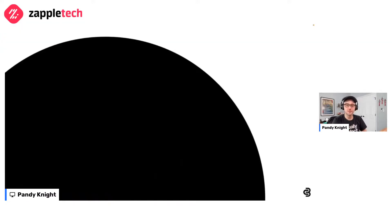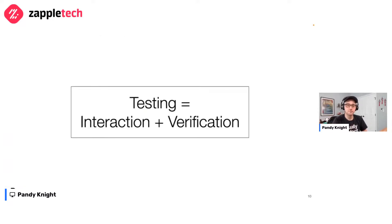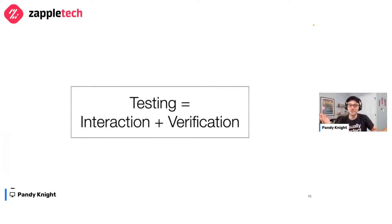To start, let's define that big 'I' word — interactions. Simply put, interactions are how users operate software. For this talk, I'll focus on web UI interactions like clicking buttons and scraping text. Interactions are indispensable to testing. The simplest way to define testing is interaction plus verification — you do something and you make sure it works. Think about any functional test case you've ever written or executed: it was a step-by-step procedure where each step had interactions and verification.